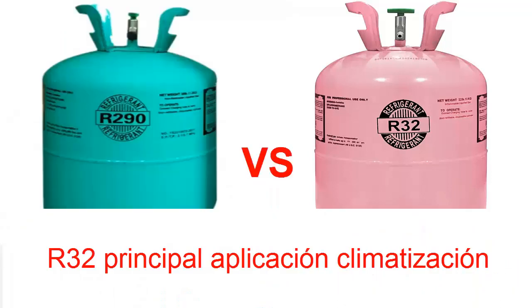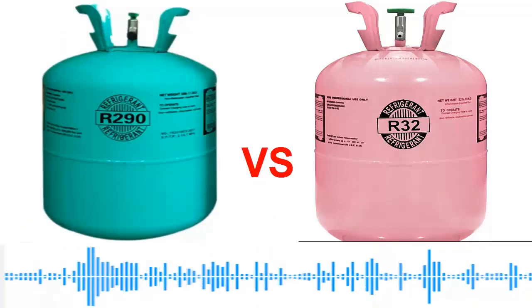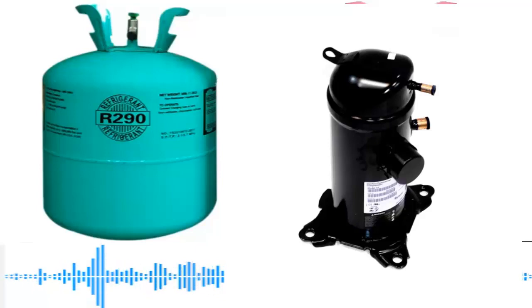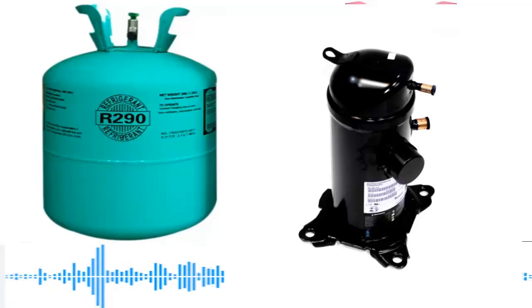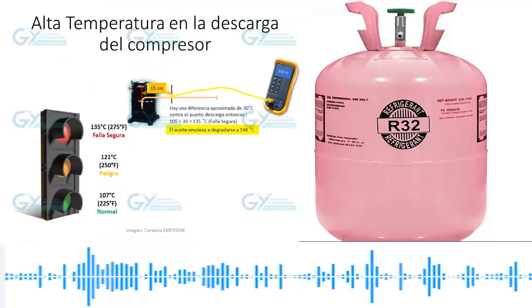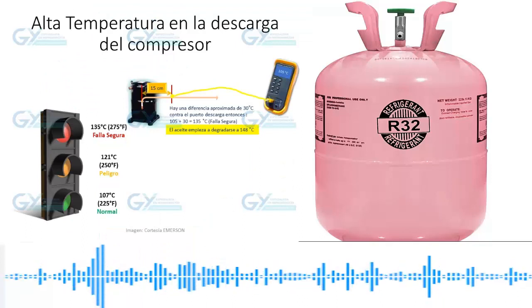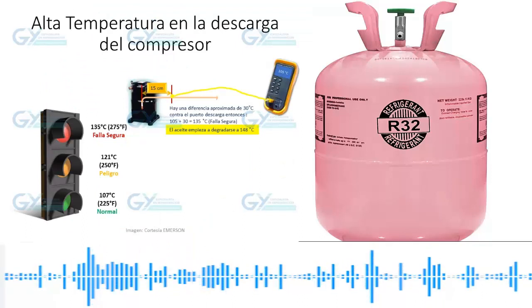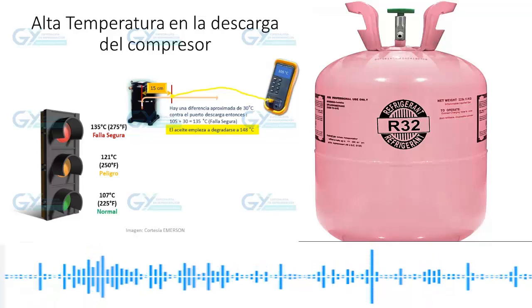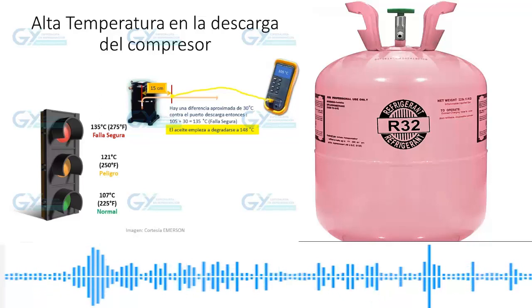The R290 has a very low discharge temperature, meaning the temperature at the output of the compressor is much lower than that of the R32. The R32, on the other hand, has a very high temperature at the output of the compressor. Both refrigerants will have high pressure, but the temperature of the R32 refrigerant will be much higher than that of the R290 refrigerant.